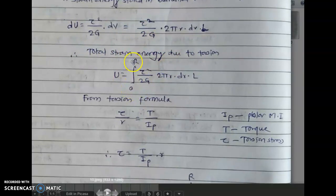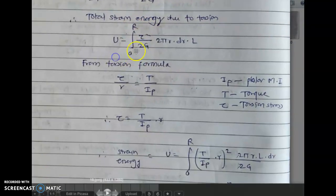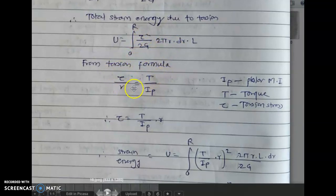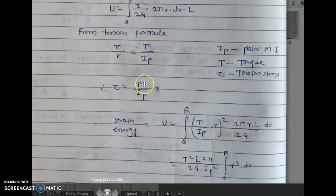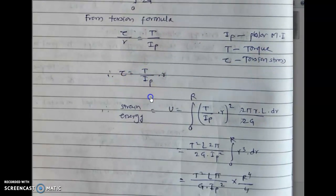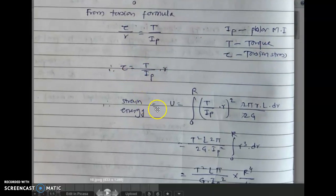The total strain energy is found by integrating from radius 0 to R: tau squared upon 2G into 2·pi·r·dr·L. From the torsion formula, tau divided by r equals T divided by Ip, where Ip is the polar moment of inertia, T is the torque, and tau is the torsional shear stress. Therefore tau equals T·r upon Ip.